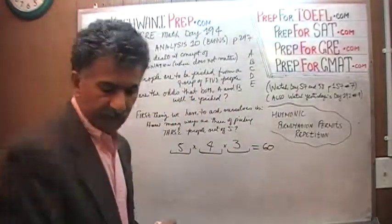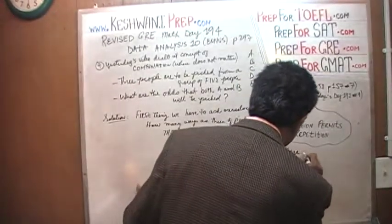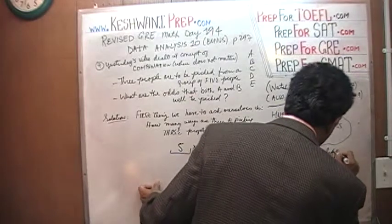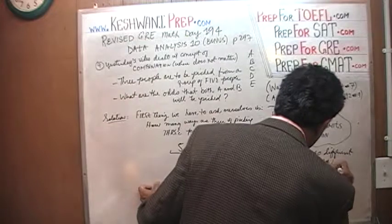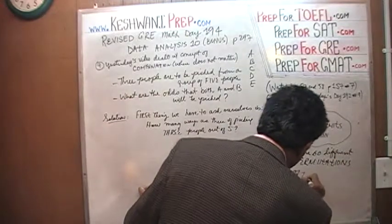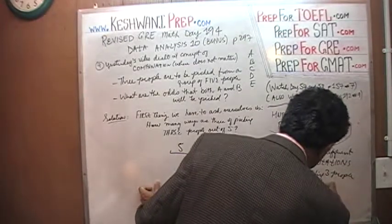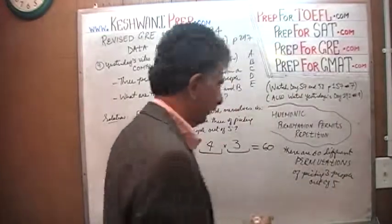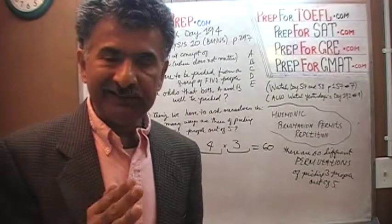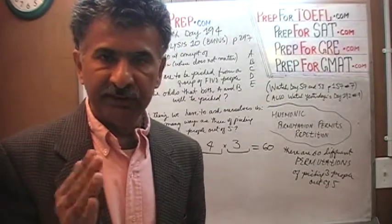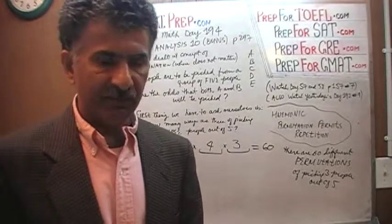So there are sixty different permutations of picking three people out of five. Now because it is a permutation, order matters. A, B, C is counted as one permutation; B, C, A is counted as another; and C, B, A is counted as another. Those are three different arrangements, three different permutations — counted as three distinct outcomes. This is not a combination problem.